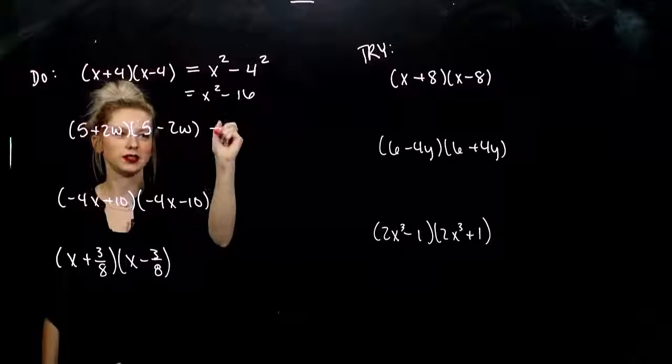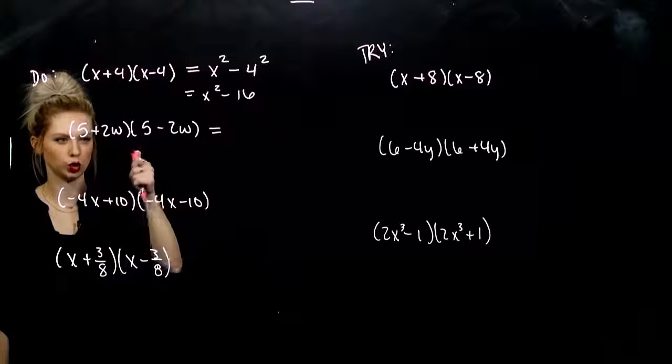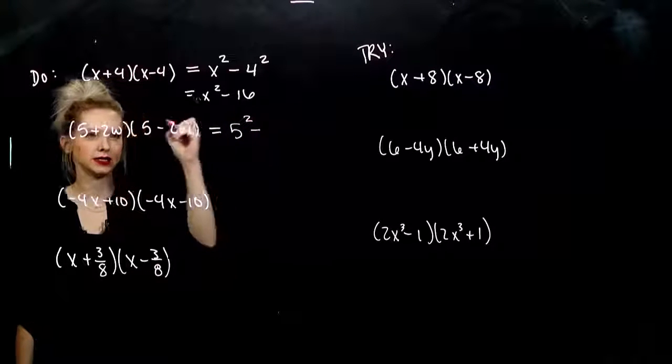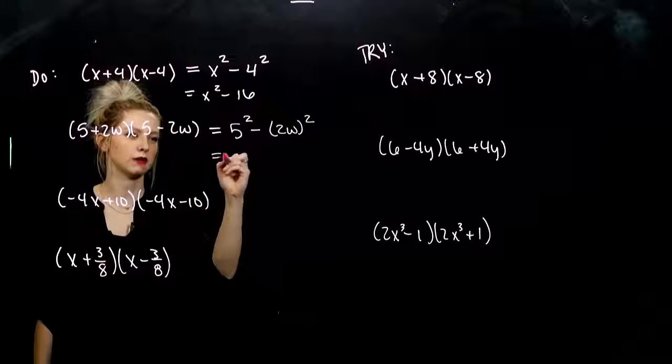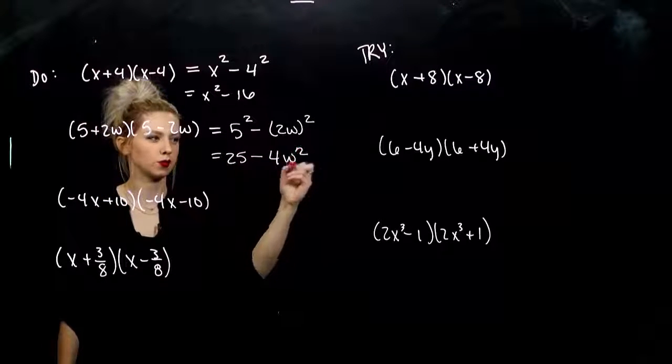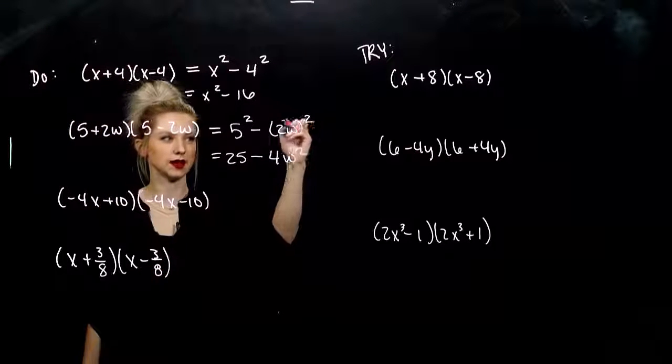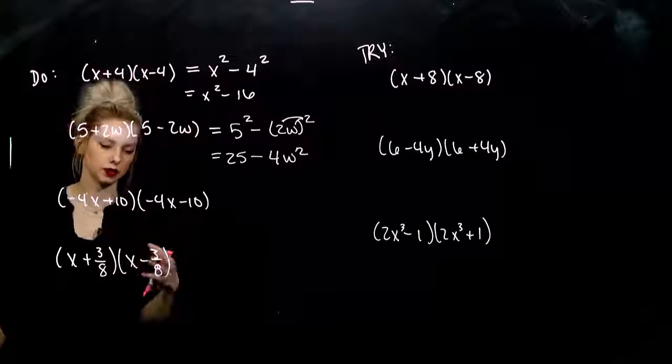Second one, does it fit the pattern? Same, same, different sign. Cool. First one squared minus last one squared. So what do we get? 25 and we're subtracting off 4w squared. Don't forget, when we have a product on the inside here, we have to distribute the square to both terms. Both parts of the term anyway.